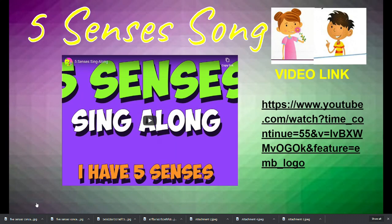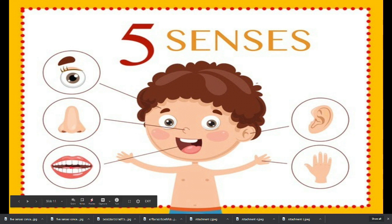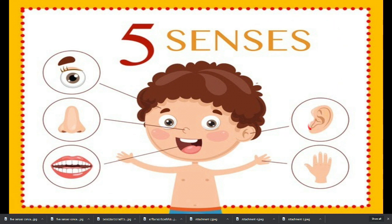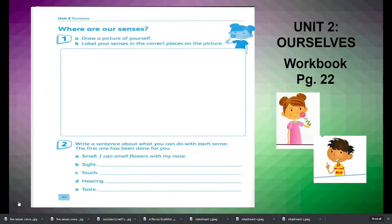You can sing along with this five senses song. Now let's name what part of the body this is. That is eyes to see. How about this one? That is your nose to smell. And this is your tongue to taste. How about this one? This is our ears to hear the sounds. And your hand to touch things.